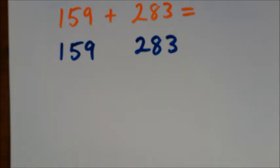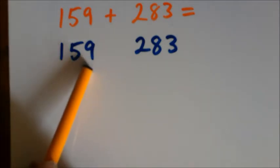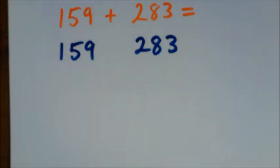Yes, it's the ones column that we're looking at, and what are the digits that we've got in those two ones columns? We've got a nine in this number and a three in this number. Now which one, which of those two numbers are we going to round, and are we going to round it up or are we going to round it down?